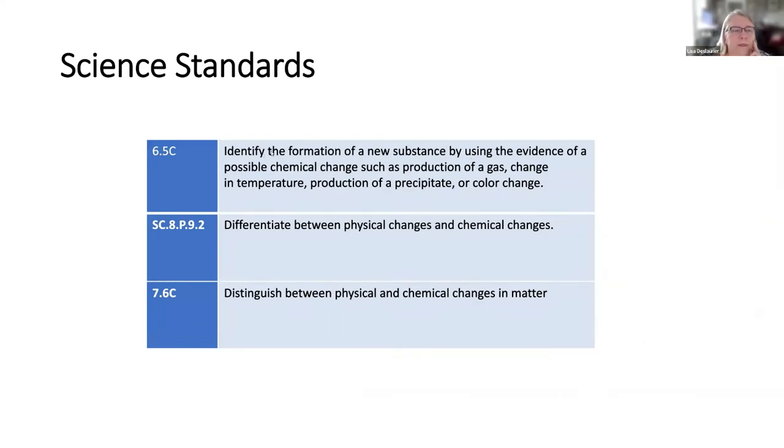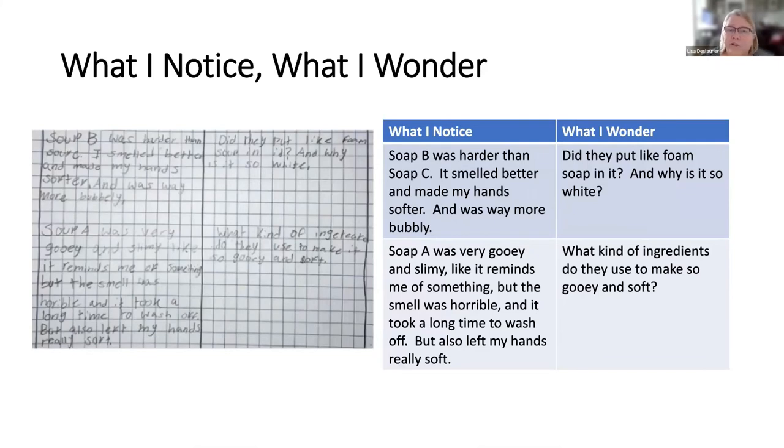So this is the anchoring phenomenon is either showing them pictures of the soap or having them actually wash their hands with two different kinds of soap, which would be better. Some of the standards. The sixth grade one in Texas about evidence of the chemical change. And then we have some in Florida and Texas about differentiating between physical and chemical changes. So we're going to be focusing on that standard. And these are some student artifacts that I've found about what did they notice? What did they wonder? And so I've just transcribed what was actual student work. They actually did this with three different kinds of soaps, but I was trying to make it simpler for my example. And so I just used two. And so these are things that students might write down, what I noticed, what I wonder. And I want you to pay attention to the progression of student thought as you go through the lesson.